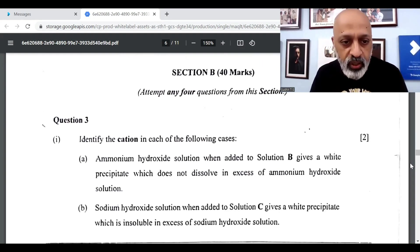Identify the cation in each of the following cases. Pb2+. The second one is Pb2+ or Zn2+.